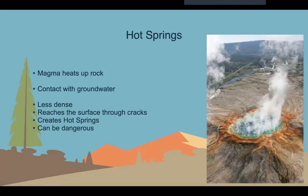These hot spots allow for geothermal features like hot springs, as they provide a source of heat. Magma heats up the rock, which comes in contact with groundwater and runoff water. As the water heats up, it becomes less dense and rises to the surface through the cracks, creating hot springs, which are pretty acidic.